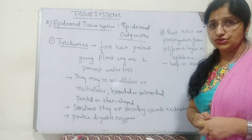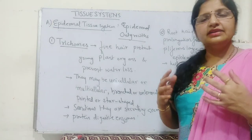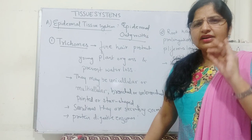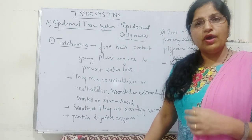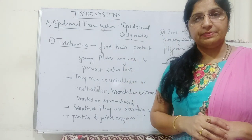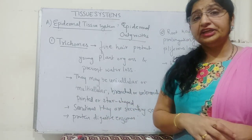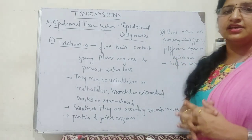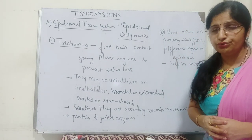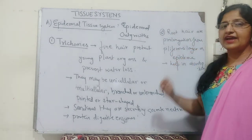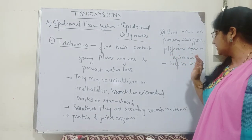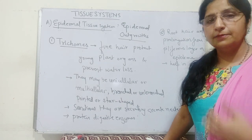Sometimes trichomes are secretory in nature, secreting nectaries — especially in insectivorous plants like Venus flytrap and sundew (Drosera). The glandular tips of these trichomes contain protein-digesting enzymes that help the plant digest insects to obtain energy. Root epidermis, also called the piliferous layer, gives rise to unicellular root hairs that help in absorption of water and minerals from the soil.